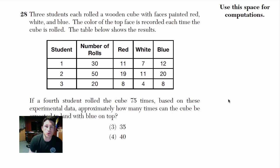We've got 3 students each rolled a wooden cube with faces painted red, white, and blue. The color of the top face is recorded each time the cube is rolled. The table below shows the results. So student 1 rolls a cube 30 times, and these are the results. He gets 11 red, 7 white, 12 blue. It seems like he rolls it more times, he gets more blue. They roll it less times, they get less blue.